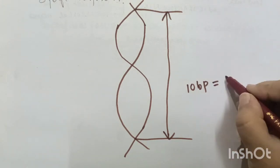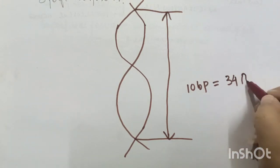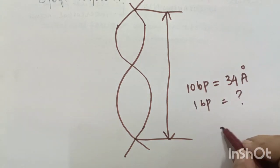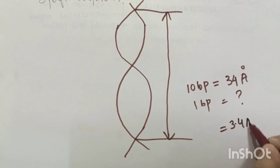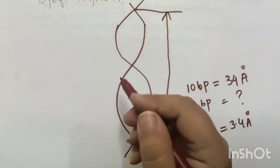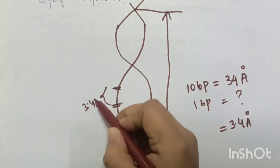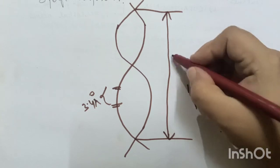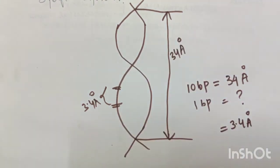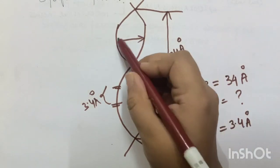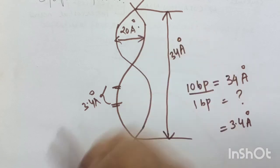And 10 base pairs has about distance of 34 Angstrom per turn. 1 base pair has 3.4 Angstrom. The adjacent bases are separated by 3.4 Angstrom. The whole distance is 34 Angstrom. There are 10 base pairs in one turn. And the diameter is 20 Angstrom. These are some of the features of the structure of DNA.